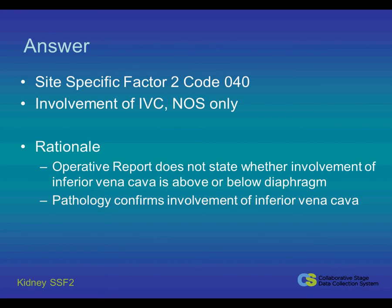In this case, there is involvement of the inferior vena cava as stated in the operative report and confirmed on the pathology report. However, we do not know whether the involvement was above or below the diaphragm. Therefore, CS Factor 2 should be coded to 040, involvement of the inferior vena cava, not otherwise specified. Vein involvement may have an effect on prognosis, so it is important to collect this information if we have it.